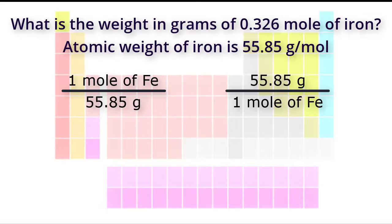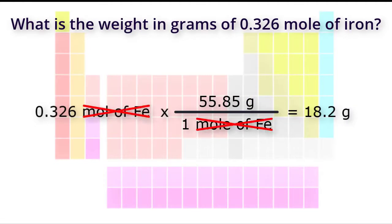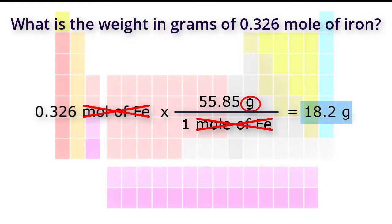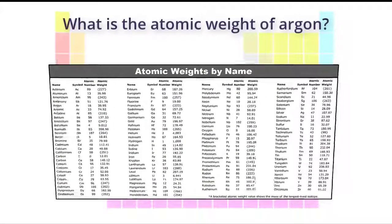Pause the video here and see if you can figure out which one to use. The correct conversion factor is the one on the right, because we need to cancel out the moles of iron in the denominator so that we are left with only grams of iron in the numerator. Doing the math, the weight in grams of 0.326 moles of iron is 18.2 grams.